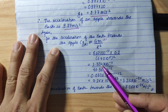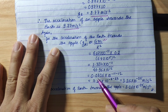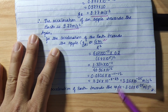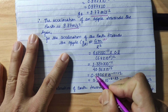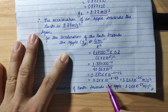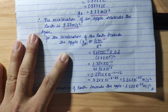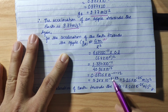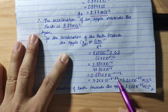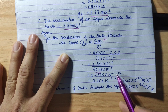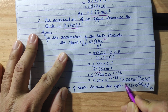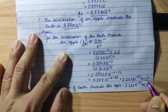Simplifying: 1.334 divided by 40.96 gives 0.0326 × 10⁻¹¹. The power becomes 10⁻¹¹ divided by 10¹² = 10⁻²³. Further adjusting the decimal: 3.26 × 10⁻²⁵ meter per second square.